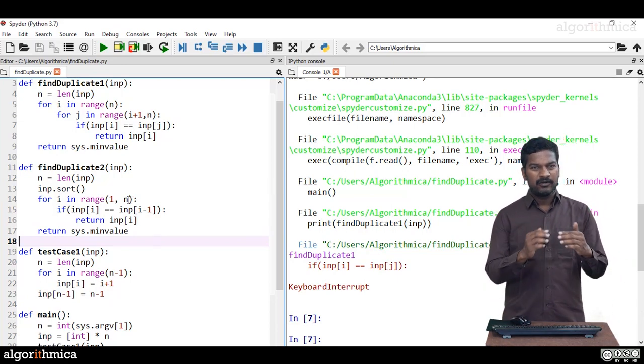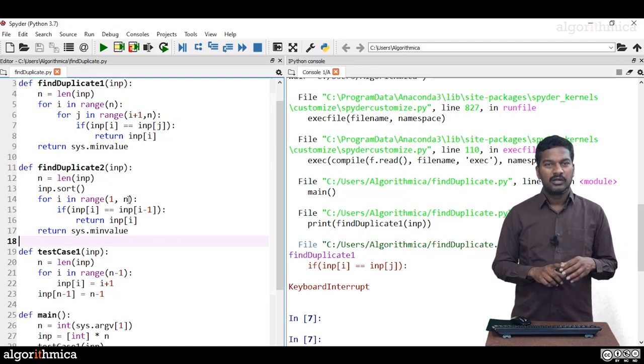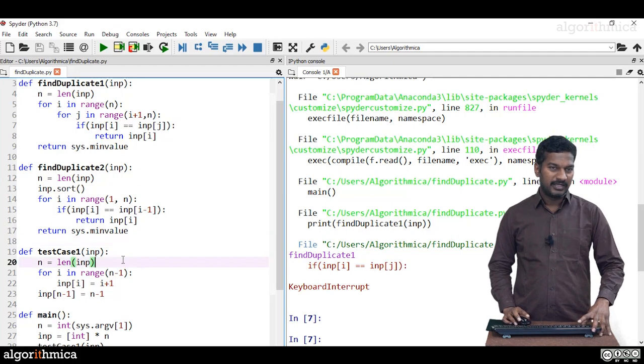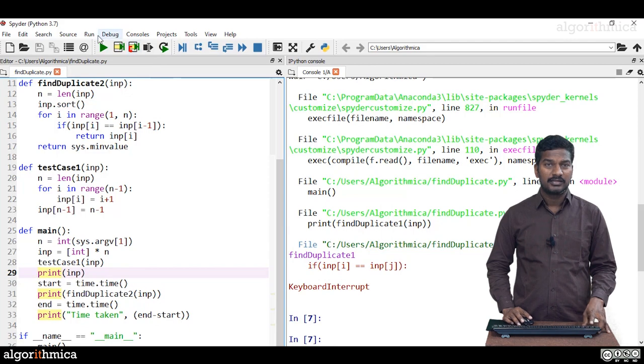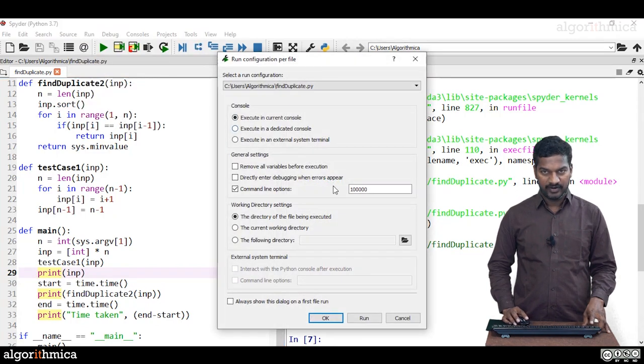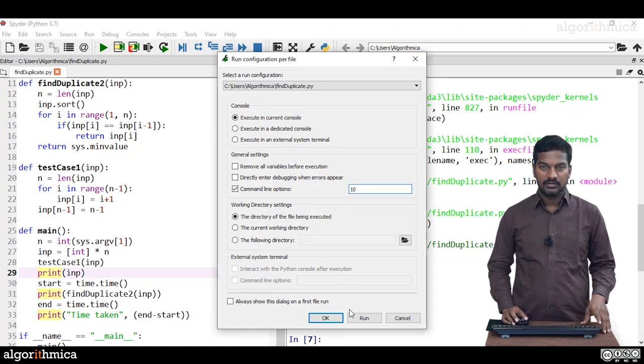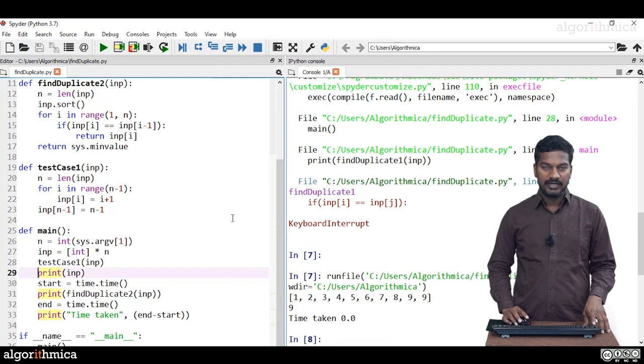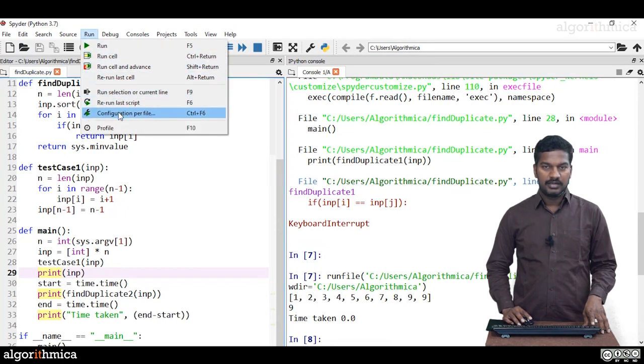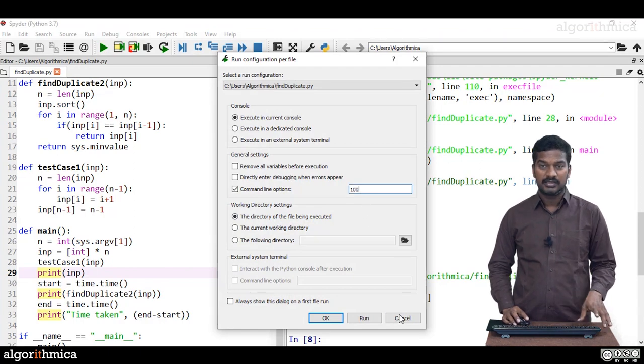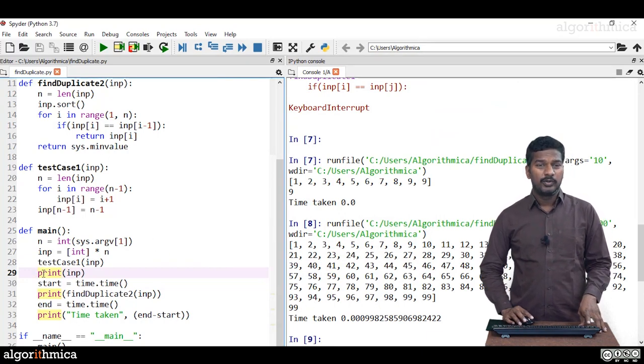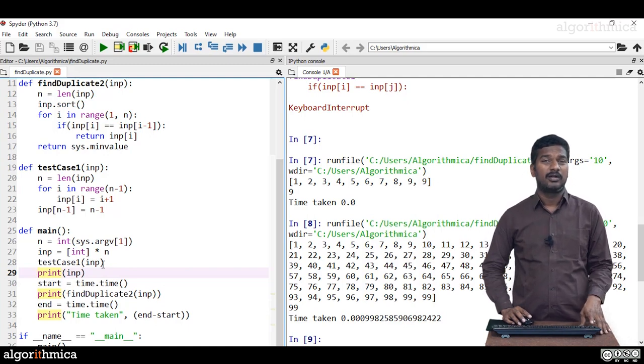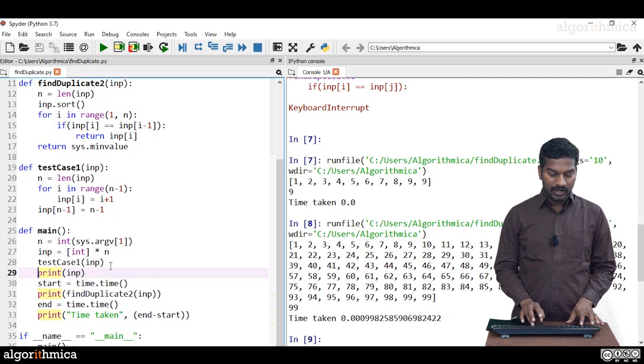How well is it going to perform? First, let me check the correctness. Let me change find duplicate one to two and display this. In the run configuration, we'll test for 10 elements now. You can see nine. Let's give 100 elements now and run. You can see 99 - nine nine is repeated, it's working. You'll need to test some boundary cases. Now let's do performance testing. Let me comment this print statement.